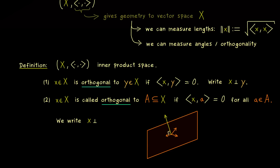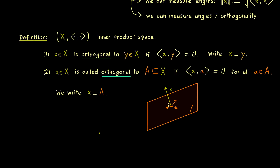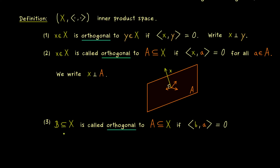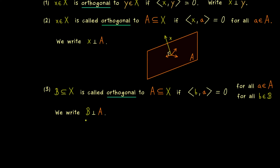We use the same perpendicular symbol even for subsets and subspaces. This definition is usually stated for subspaces in X, but it actually works for general subsets as well, making it even more general. It's also possible to say that two given subsets are orthogonal to each other: subset B is orthogonal to subset A if for every vector b in B and every vector a in A, the inner product ⟨b, a⟩ vanishes. So we may have to check infinitely many inner products.